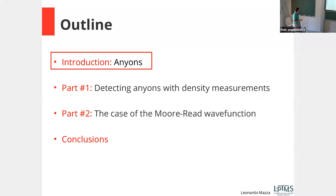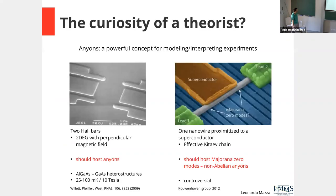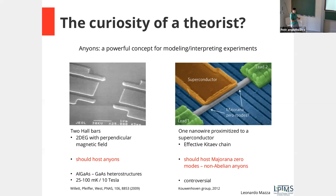Here is the outline: a brief introduction more on anyons and what quantity I want to pinpoint; in part one, the idea of detecting anyons with density measurements; in part two, applying this to the Moore-Read wave function, one paradigmatic quantum Hall effect wave function. Anyons are not just a curiosity of theorists — they are actually a powerful concept for modeling real experiments.